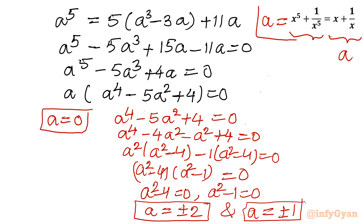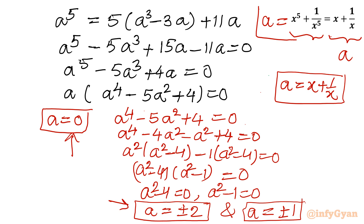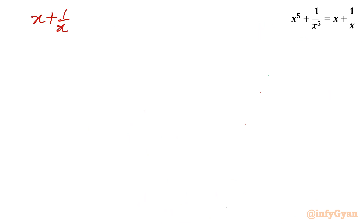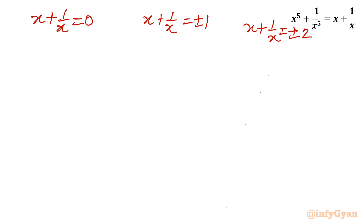Remember a equals x plus 1 over x. So there are 5 values of a: 0, plus minus 2, plus minus 1. For a equal to 0: multiplying by x gives x square plus 1 equal to 0, so x square equals minus 1 equals i square, giving x equal to plus minus i.